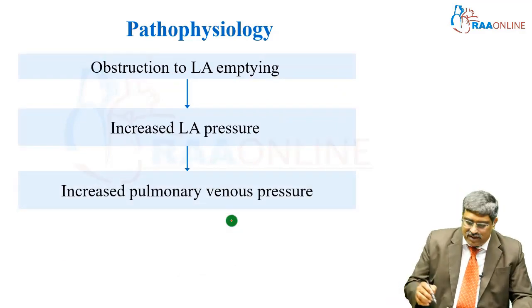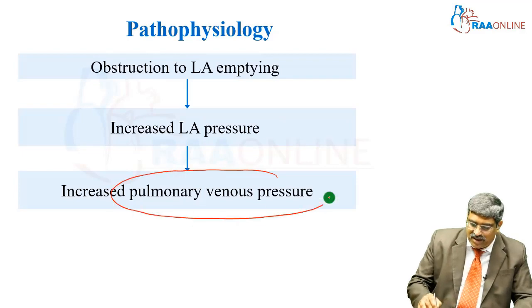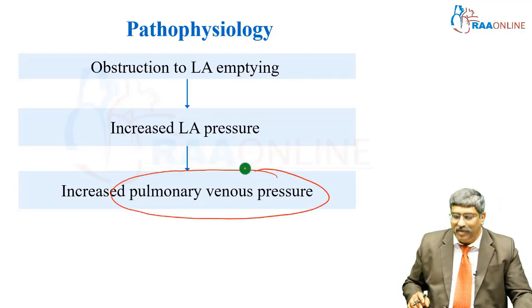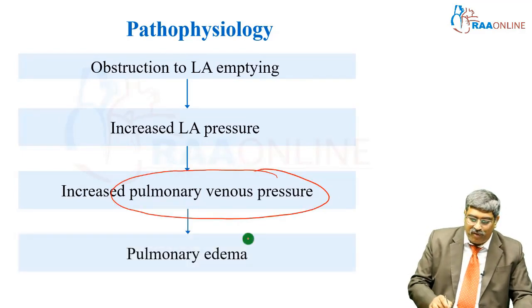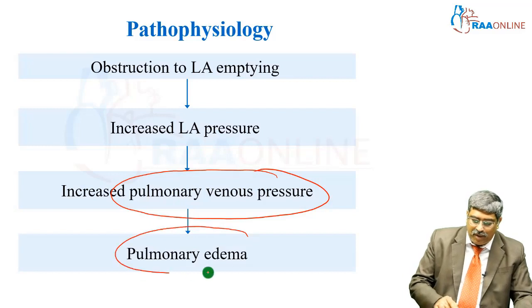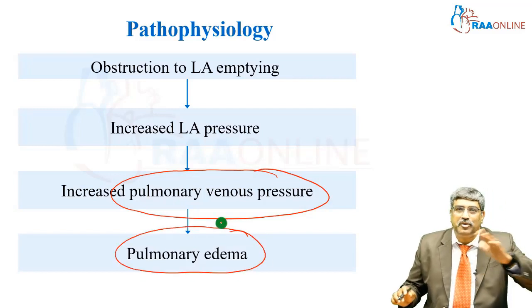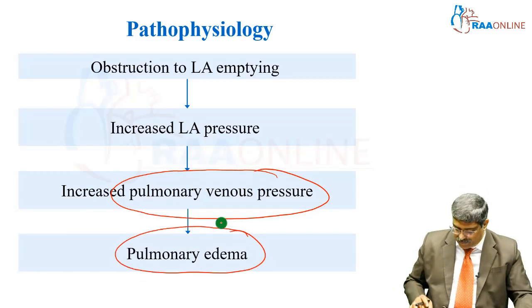Another important thing is that pulmonary venous pressure increases. When the pulmonary venous pressure increases, patients are prone for pulmonary edema, which is due to a variation in Starling's equation.